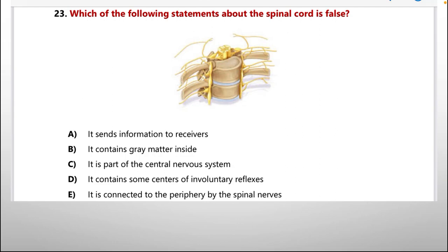Next, question number 23, which of the following statements about the spinal cord is false? Options are: A. It sends information to receivers. B. It contains gray matter inside. C. It is a part of the central nervous system. D. It contains some centers of involuntary reflexes. E. It is connected to the periphery by the spinal nerves.